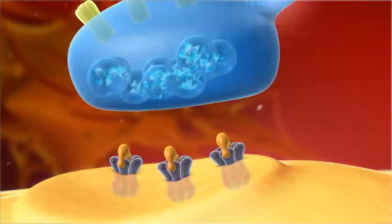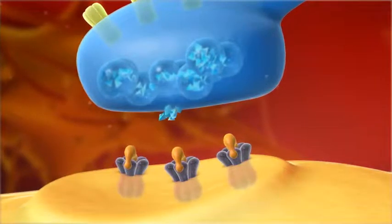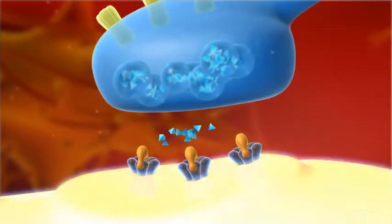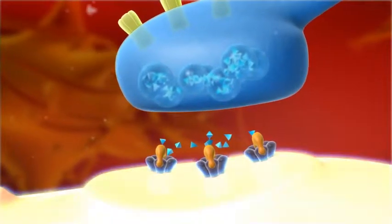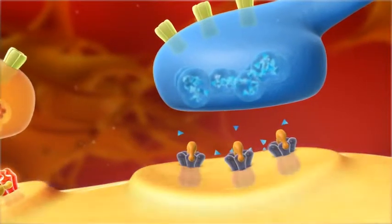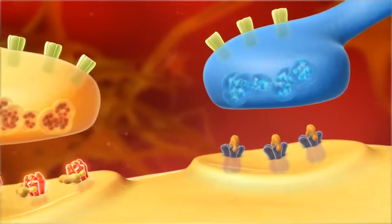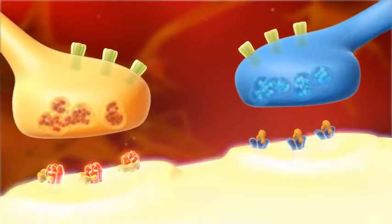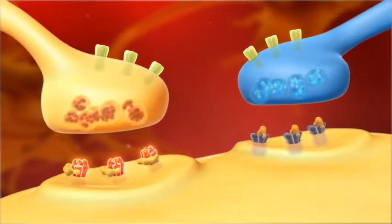Spinosad has shown no cross-resistance with existing chemistries. This is most probably due to its unique binding sites. Also, it is believed that no quick loss of sensitivity of pests will occur in the future, because spinosad targets two receptors as opposed to only one.